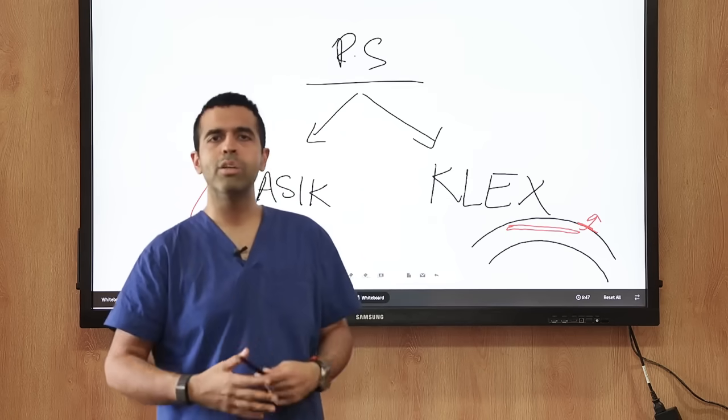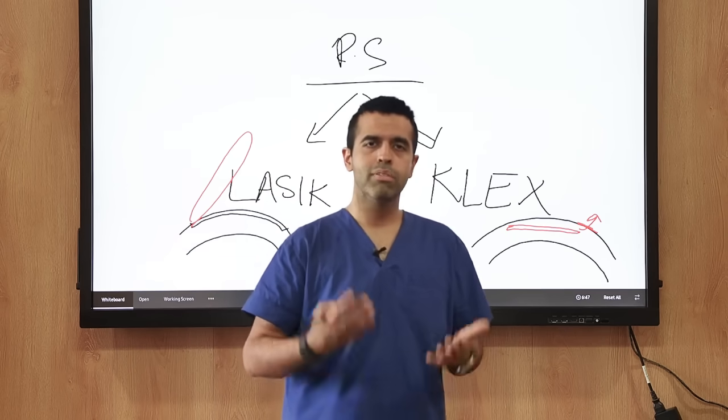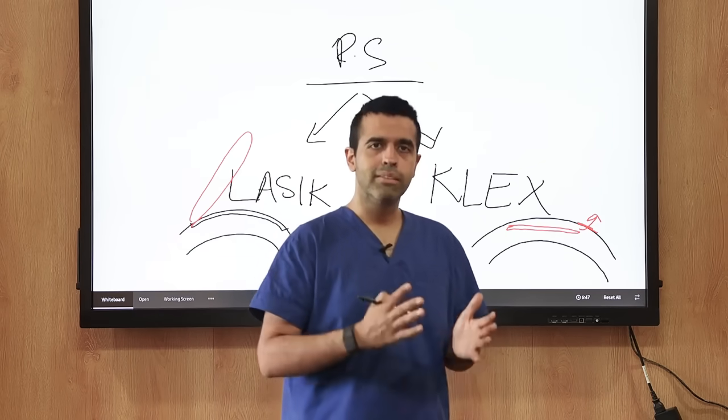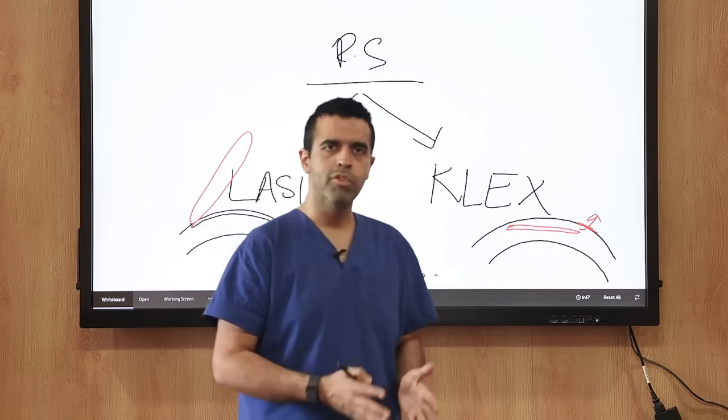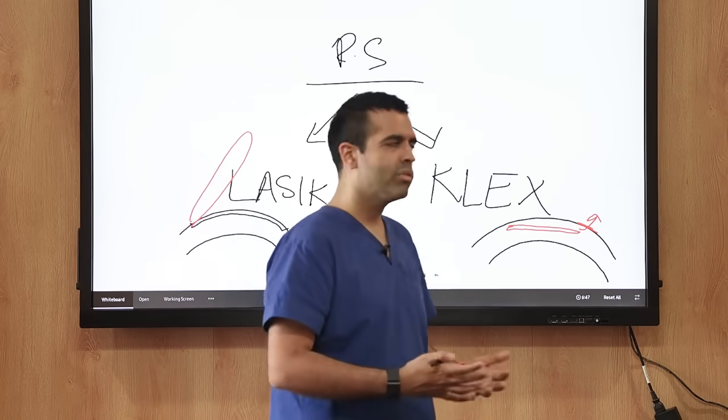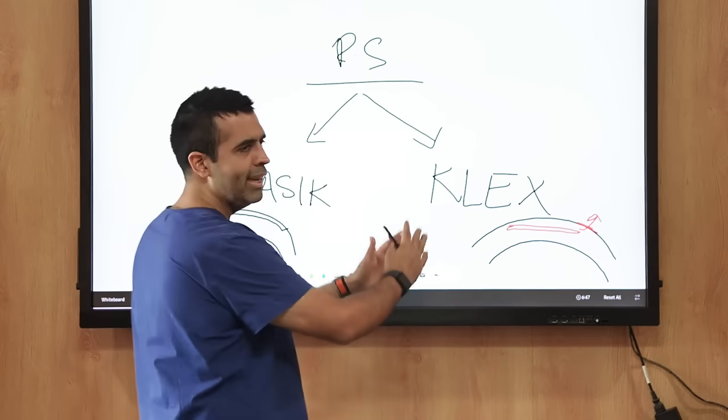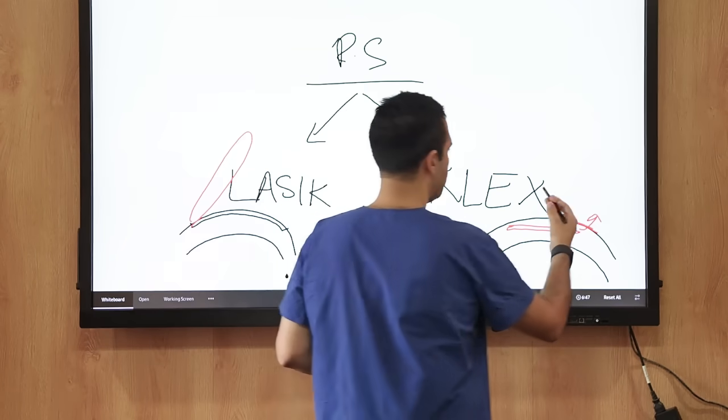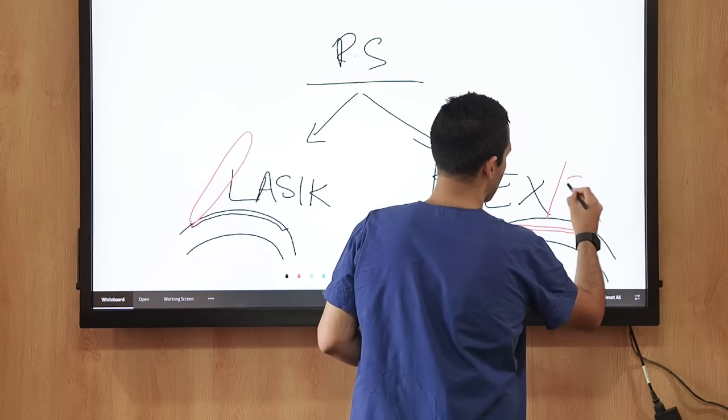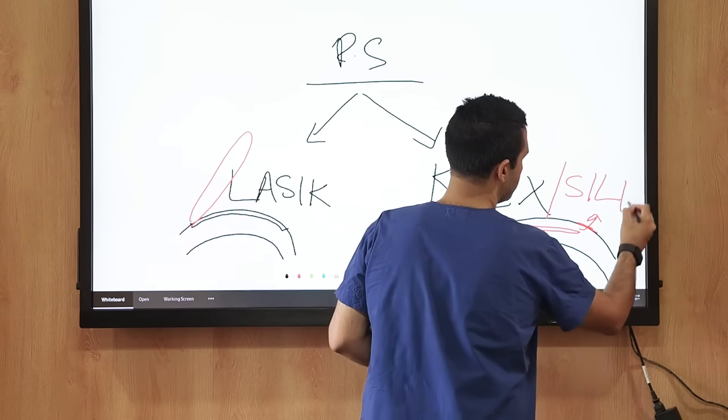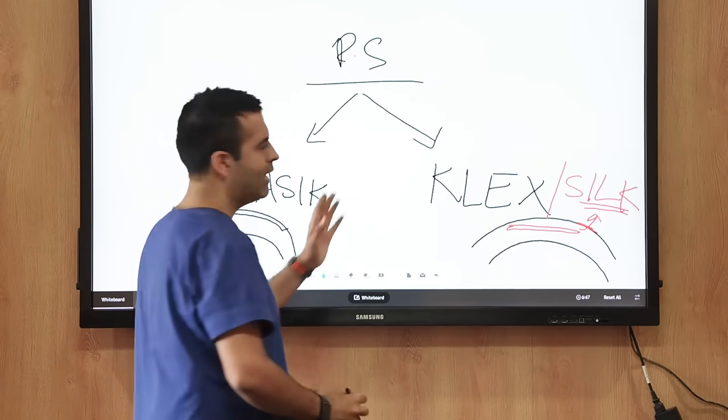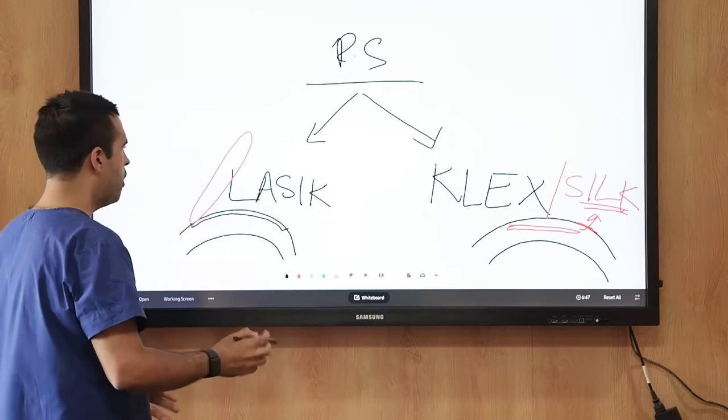Later, more machines have been launched. One of them is SILK, which stands for smooth incision lenticule keratomileusis, by an American company Johnson and Johnson. So the basic difference between the LASIK and the KLEX or SILK procedure—if I compare LASIK and SILK...